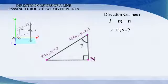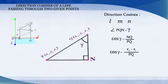Therefore, cos gamma is equal to NQ divided by PQ which is equal to (z₂ - z₁)/PQ.